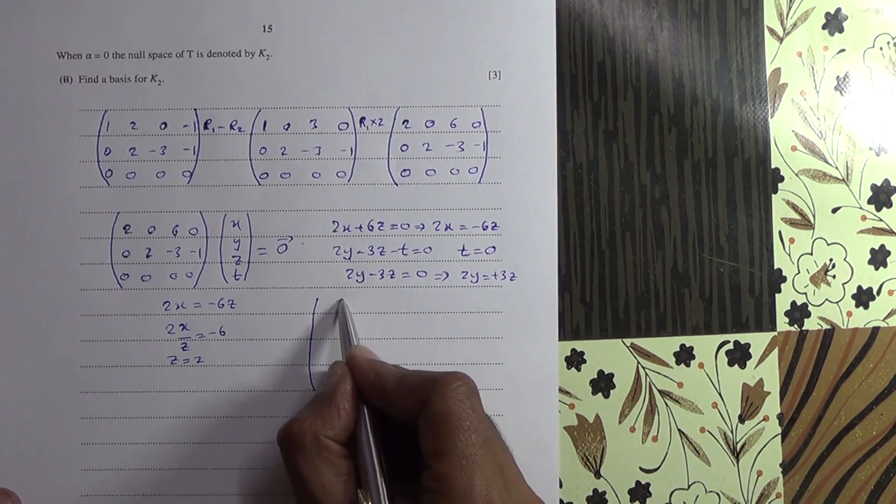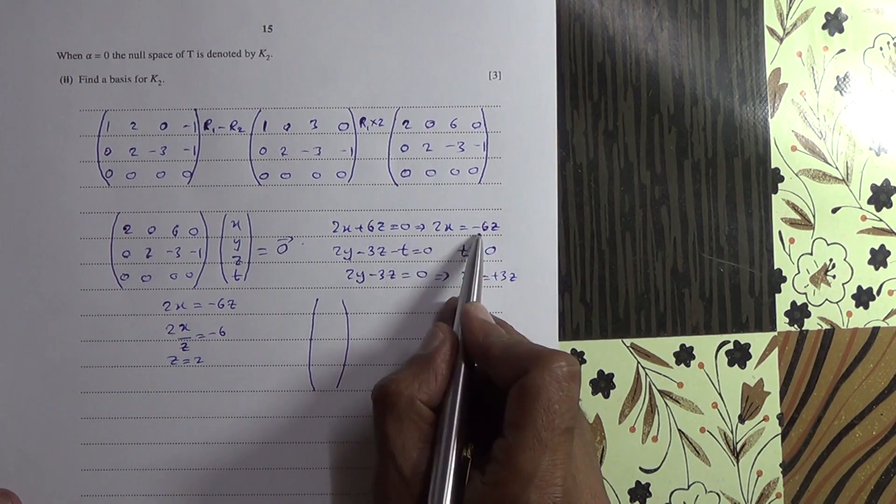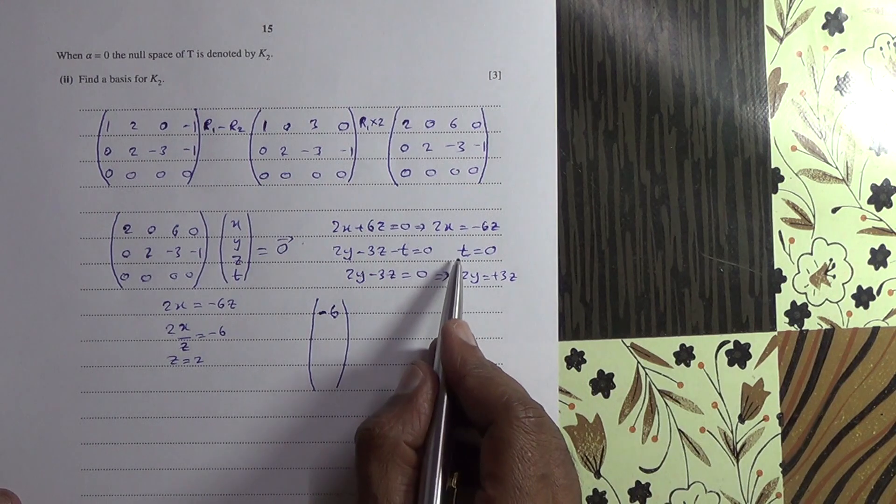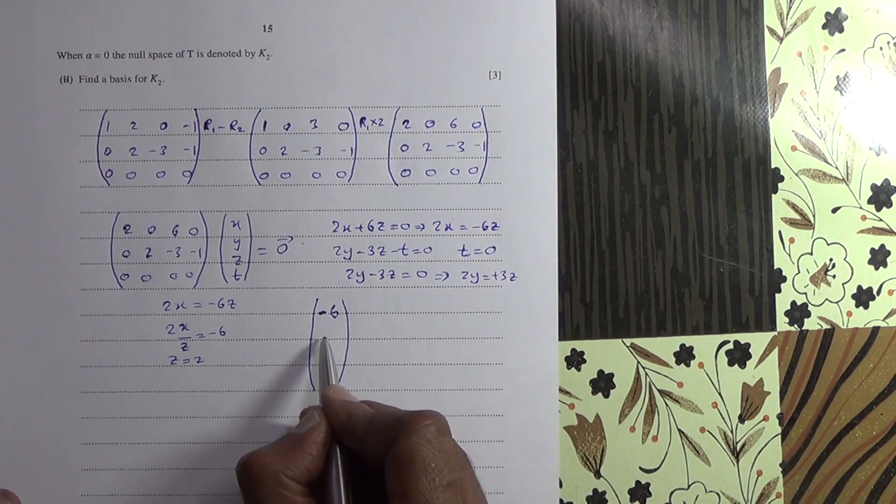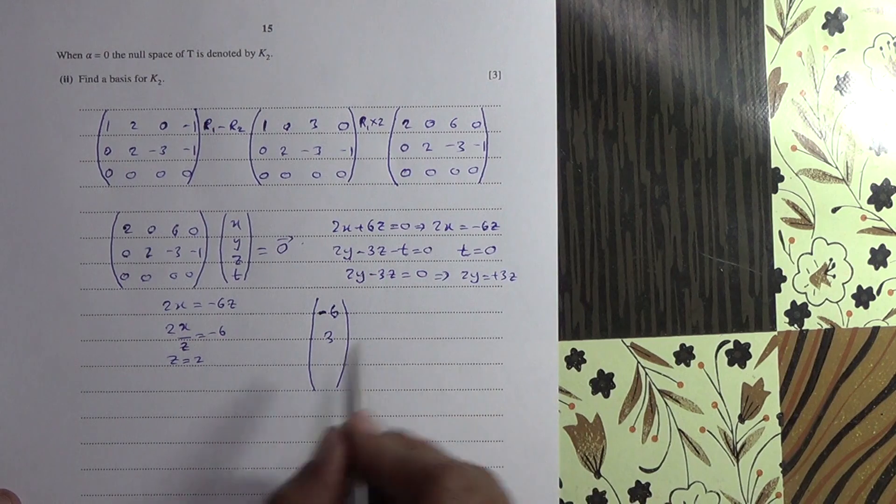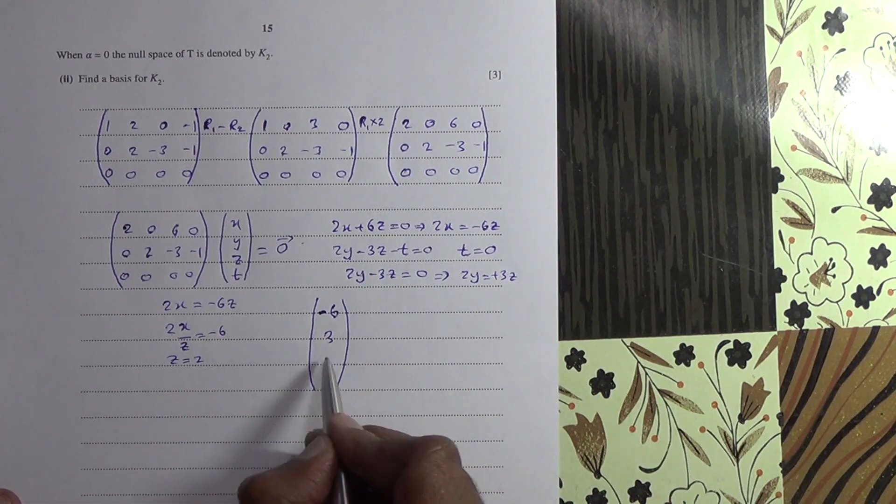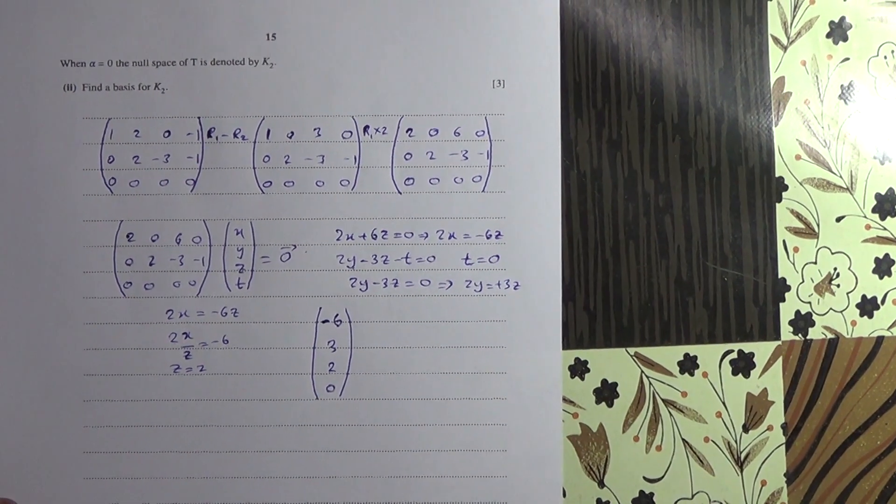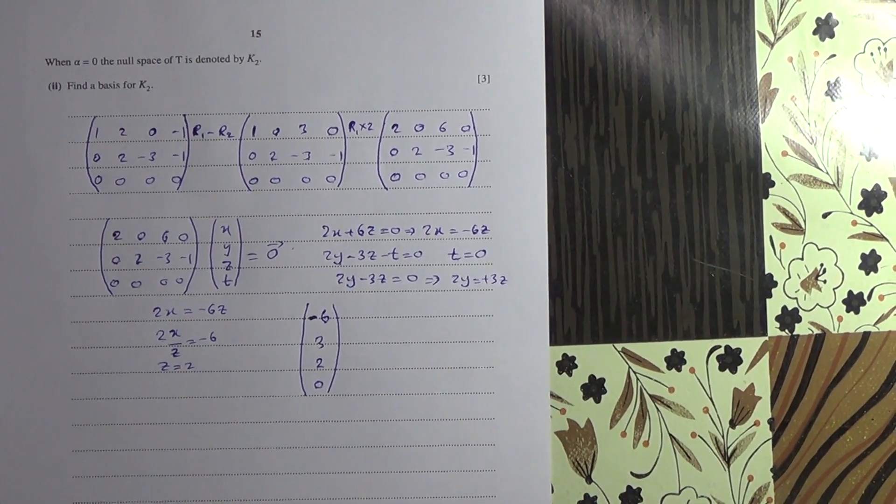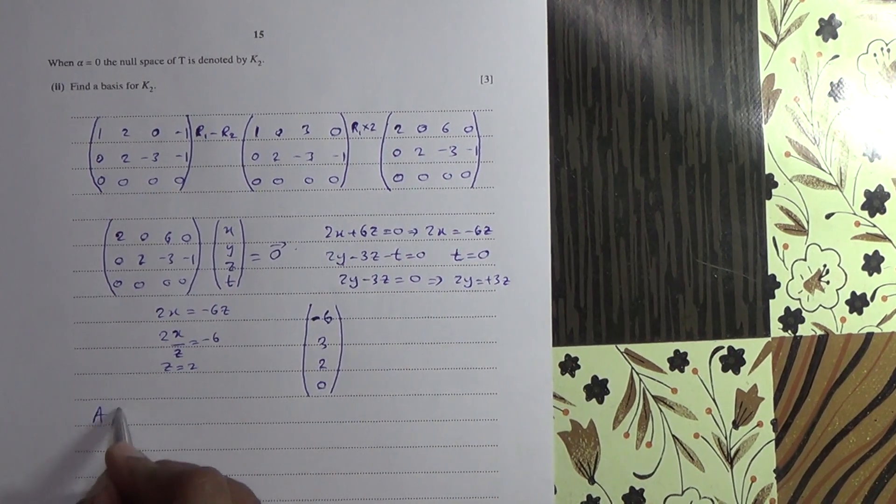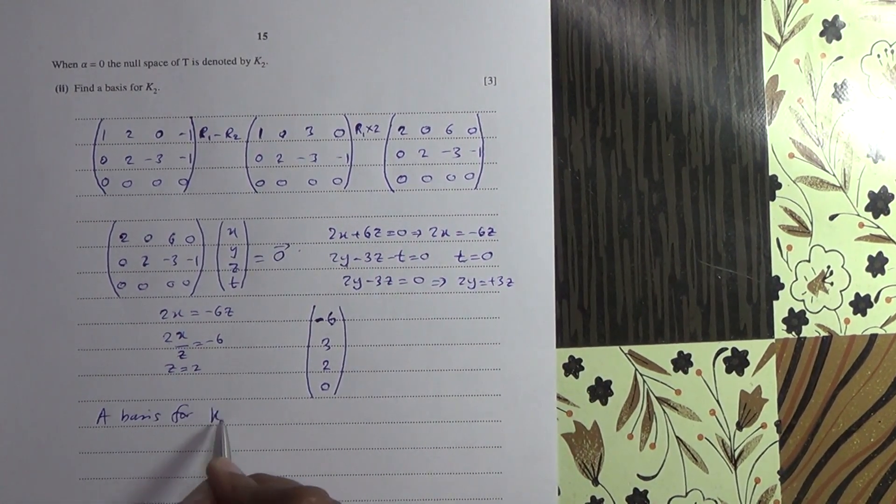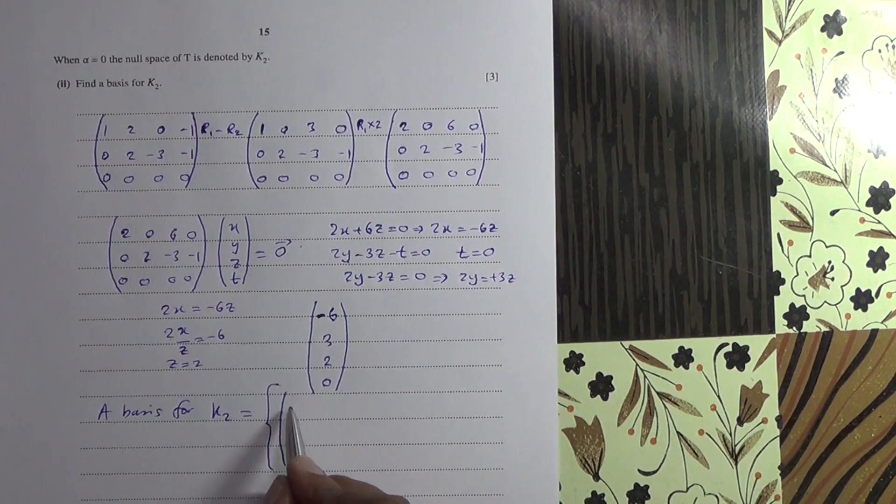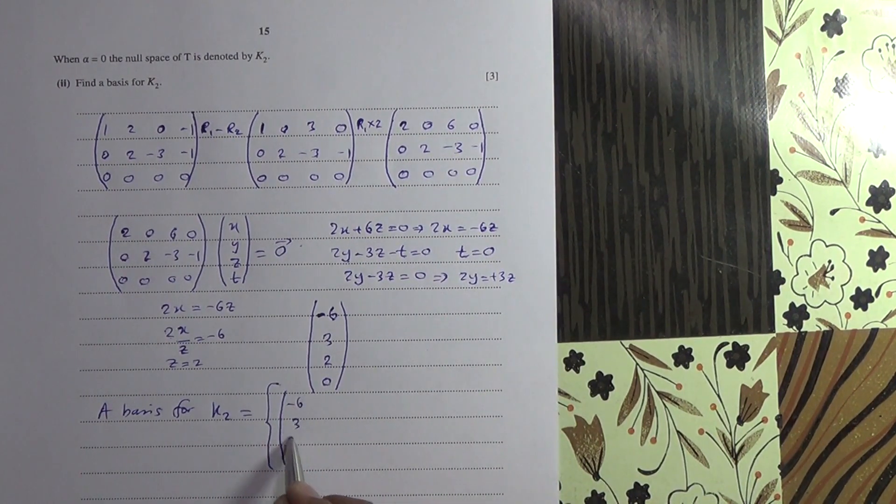So I think I've got the answer here now. So if 2x is equal to minus 6, I've got minus 6 there. And I've got 2y is equal to 3z, so I've got 3 there. Then I've got z is equal to 2, and then t is equal to 0. And therefore, a basis for k2 is going to be equal to what we just found, minus 6, 3, 2, 0.